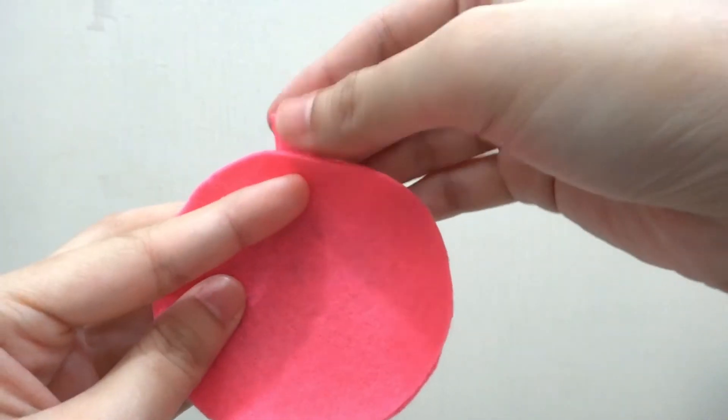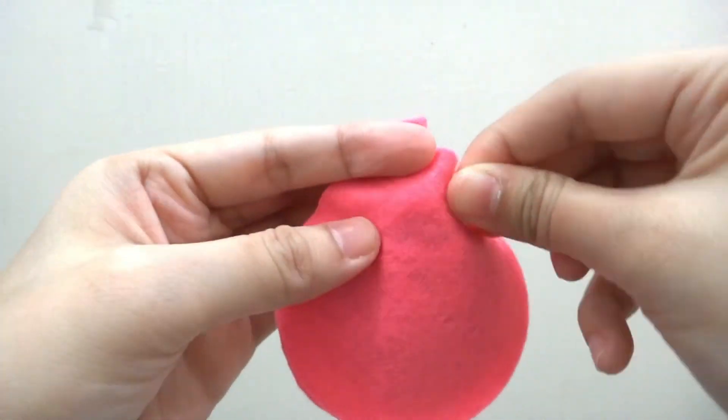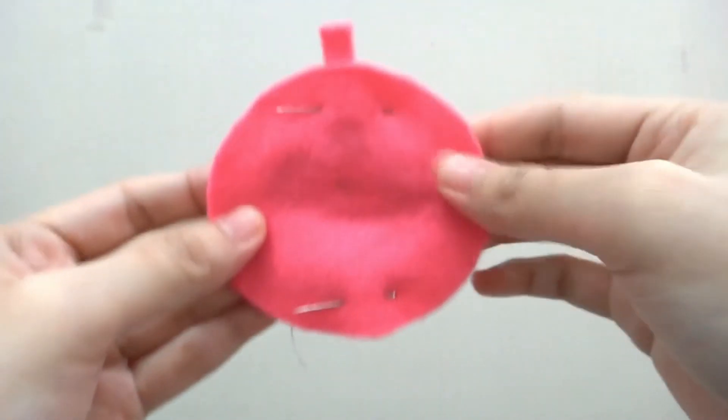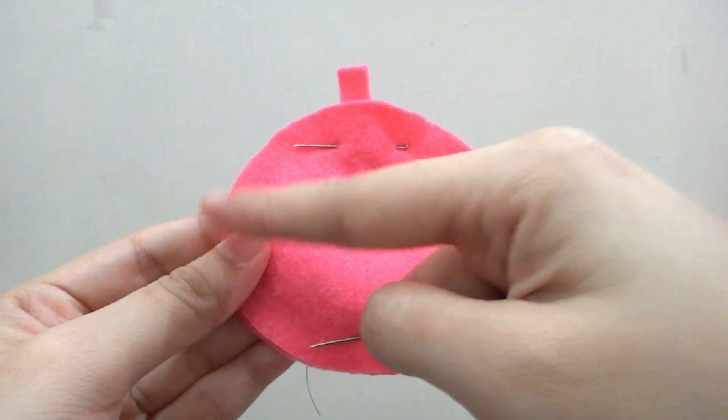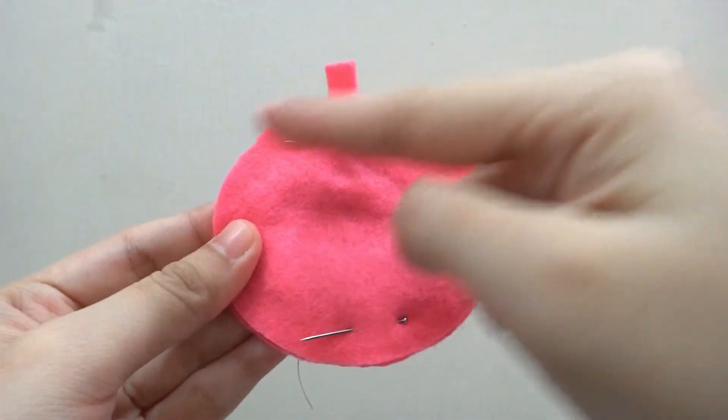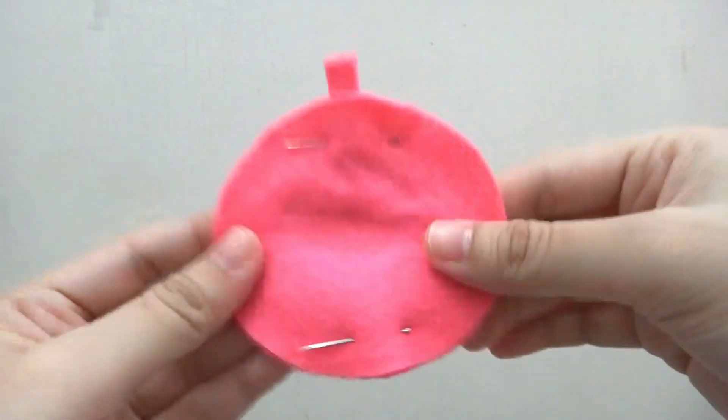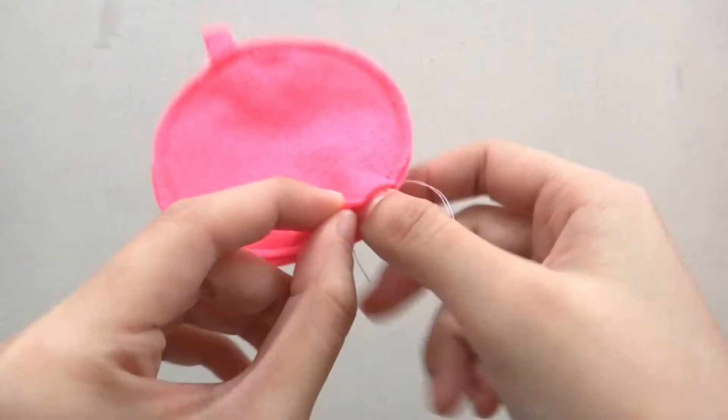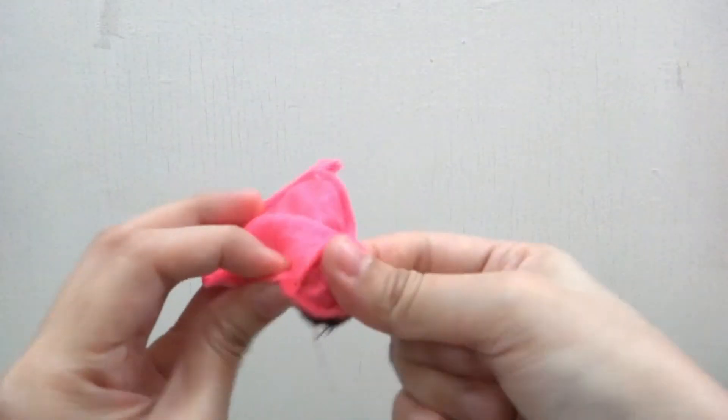Next, pin it together. You need to sew it all around but leave a small slit at the bottom. Flip the pieces inside out from the slit.